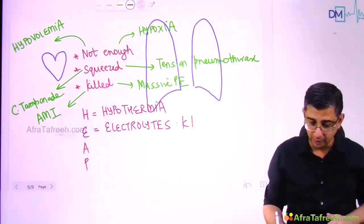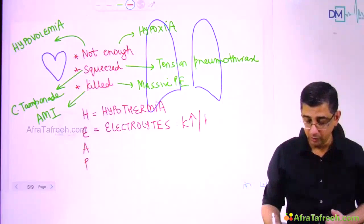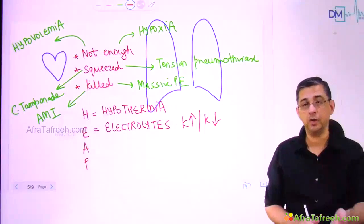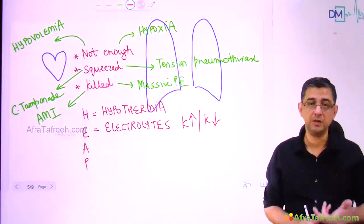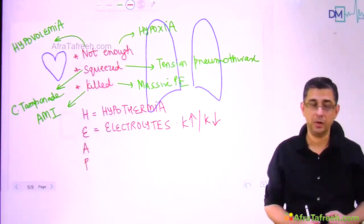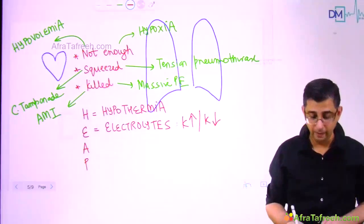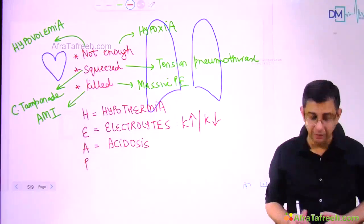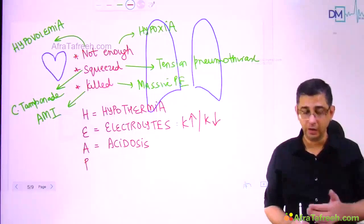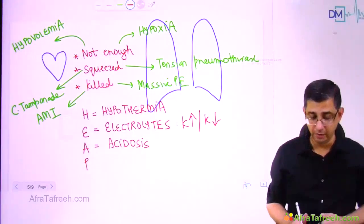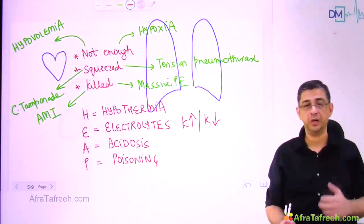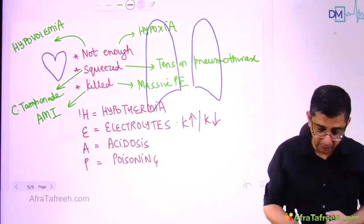A stands for acidosis — easy to pick up because the ABG sample will indicate the acidosis component along with electrolyte derangements, particularly potassium. P stands for poison — if a person has committed suicide, history will be present; for example, TCA overdose can contribute to a ventricular tachycardia. HEAP is something you will get insight into from history, examination, and lab reports, but the higher-priority causes — tamponade, pneumothorax, MI, and PE — are more immediately manageable.